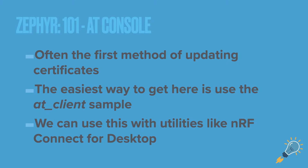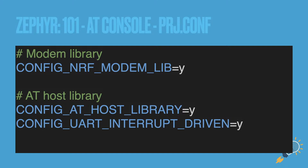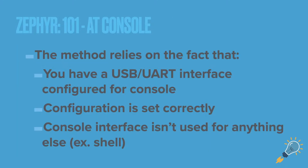The first thing we're touching on is the AT console for the NRF9160. This is what's provided if you load the AT client sample. Nordic has provided their nRF Connect for Desktop tools, which you generally use together to produce certificate provisioning. Important caveats: you have to have a USB or UART interface configured for the console, configuration set correctly, and the console interface must not be used for anything else — because the shell will take over the console.